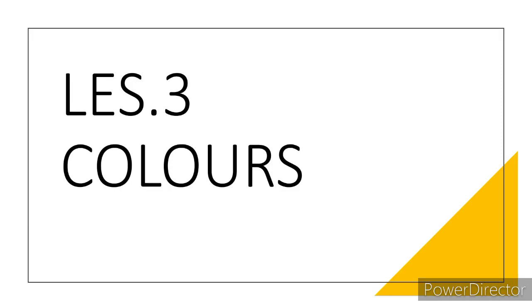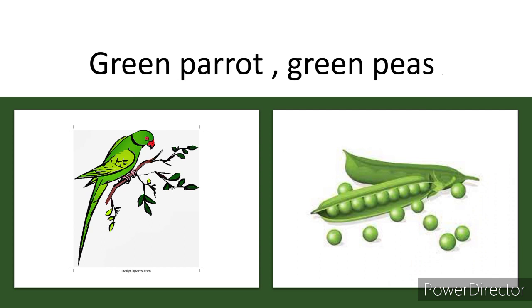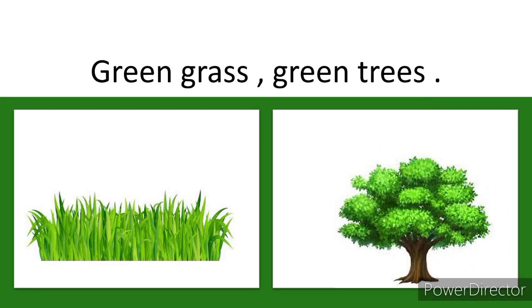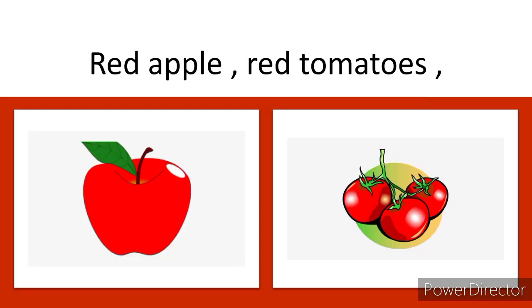Lesson 3: Colors. Green parrot, green peas, green grass, green trees.